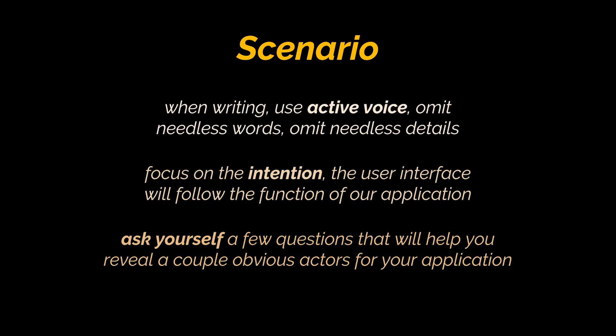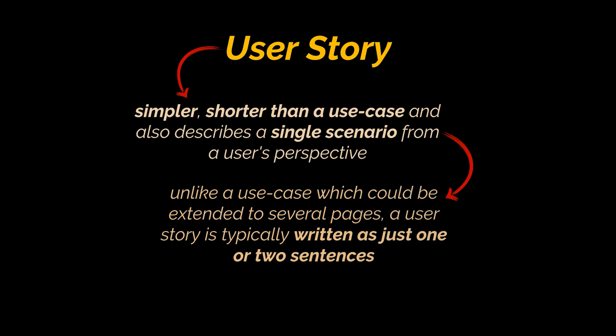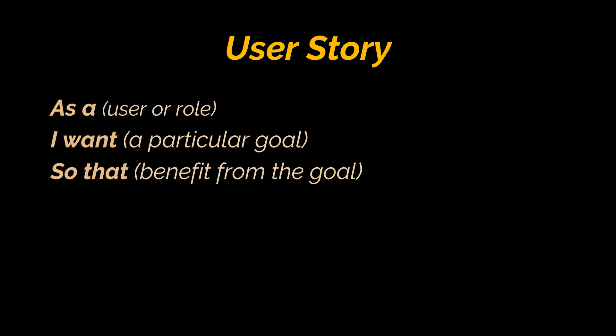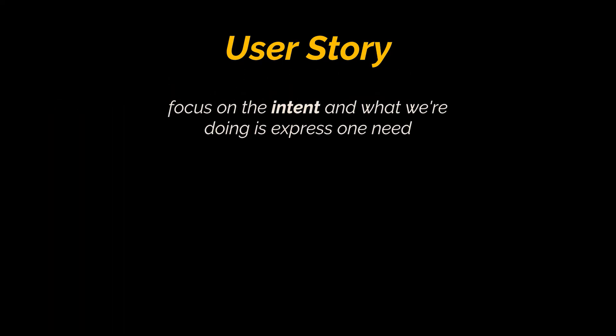A user story is simpler and shorter than a use case. It still describes a single small scenario from a user's perspective, focused on their goal rather than the system. Unlike a use case — which could extend to several pages — a user story is typically just one, perhaps two sentences. User stories follow a particular format: "As a [user/role], I want [a particular goal] so that [I benefit in this particular way]." For example: "As a user, I want to be able to sort entries by date so that I can find the most recent content."